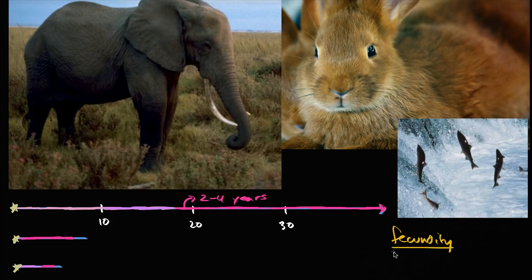Fecundity, the rate at which they reproduce, and also variation in their actual lifespan, whether you're talking about a tree, or a bacteria, or a fish, or a mammal.